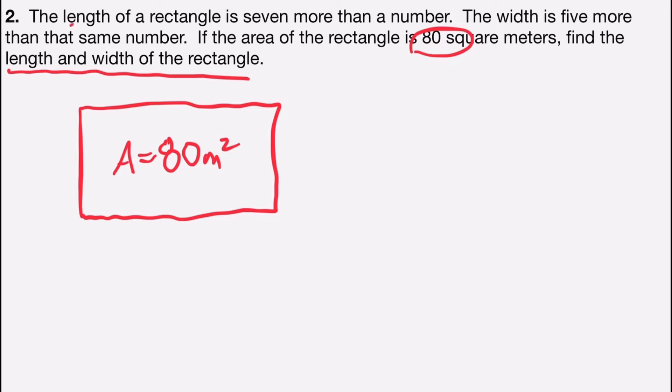Now it says the length of a rectangle is seven more than a number. So I'm going to call that number x, and I'm going to represent the length as x plus seven, since it says seven more than a number. It says the width is five more than that same number. So again, I have more than, which tells me addition, and so I'll write the expression for the width as x plus five.